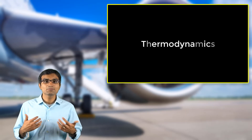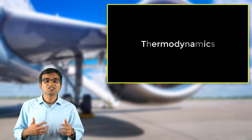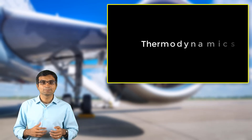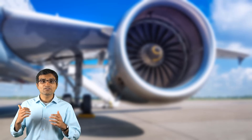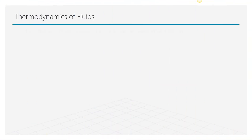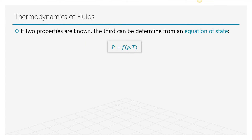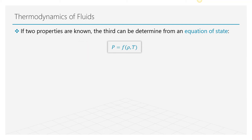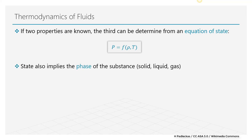The relationship between density, pressure, and temperature is given by a thermodynamic equation of state. To describe the state of a substance, it is required to specify two out of three properties — pressure, temperature, and density. With two known parameters, the third can be calculated using the equation of state. A thermodynamic phase diagram plots these three variables in a single plot and can also be used to describe the phase of the substance. Depending on the pressure, density, and temperature, a substance can be a solid, liquid, or gas.